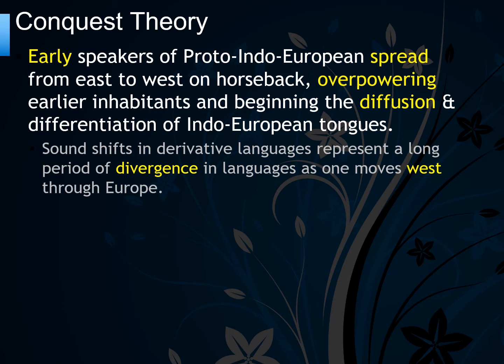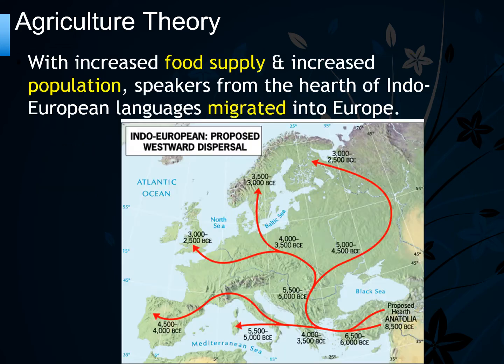The agricultural theory says the Indo-European language started in what is today Turkey — historically called Anatolia — and that with increased food supply and increased population, speakers from that hearth migrated into Europe and into South Asia.